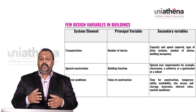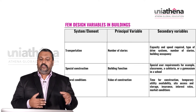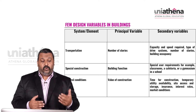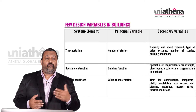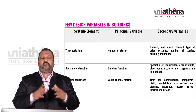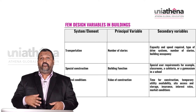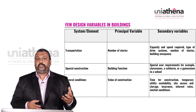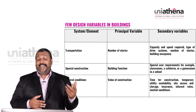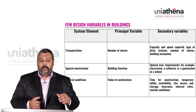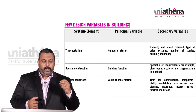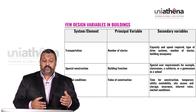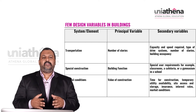For special construction as a system or element, the principal variable is building function — what is the function of the building. Secondary variables are special user requirements like classrooms, cafeterias, or gymnasiums in a school. For general conditions, the value of construction is the principal variable. Secondary variables are time for construction, temporary utility availability, site access, storage, insurance, interest rate, and market conditions.